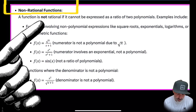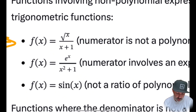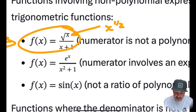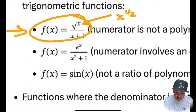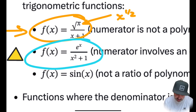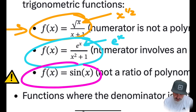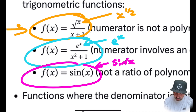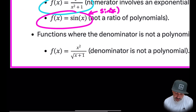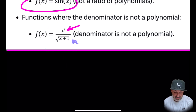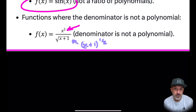Now I'll point out functions that are not rational. The first has x to the half in the numerator — we said the power must be an integer, so this is not a rational function. The second is not rational because the numerator is an exponential, not a polynomial. The third is not rational because it contains a trig function, sin x. The fourth: even though part of the numerator may look like a polynomial, the denominator is x plus one to the half, which is not a polynomial — so it is not a rational function.